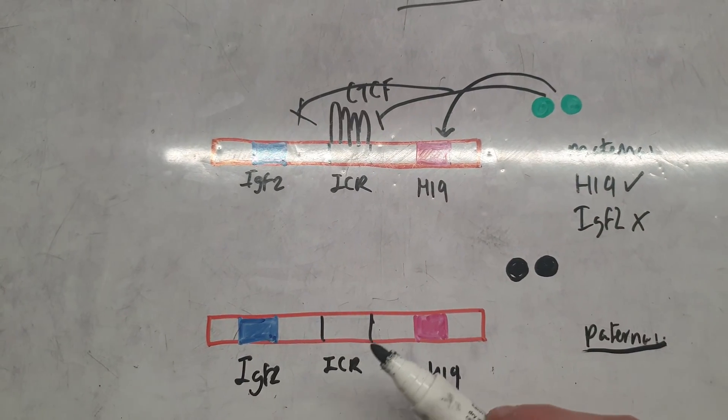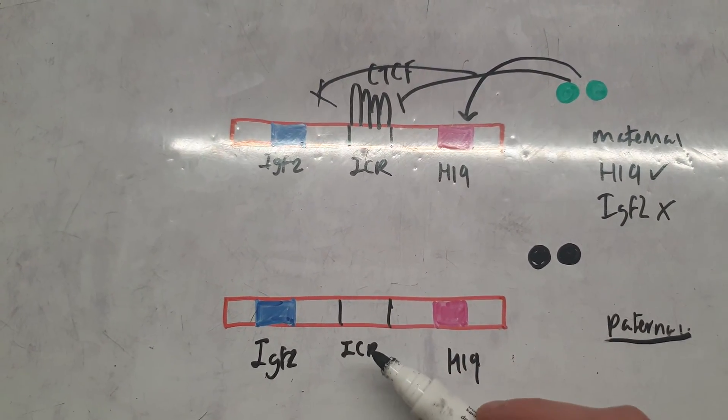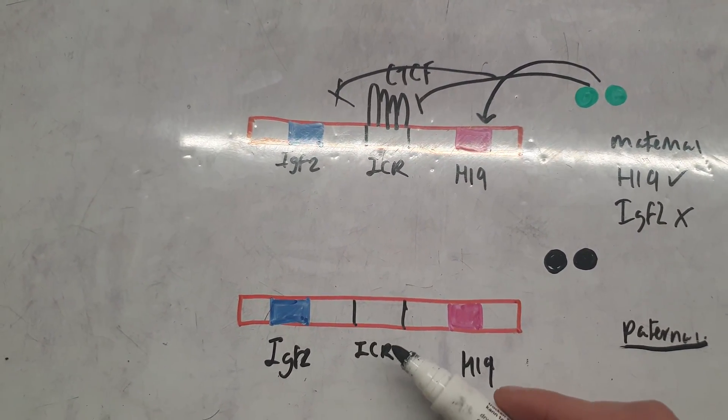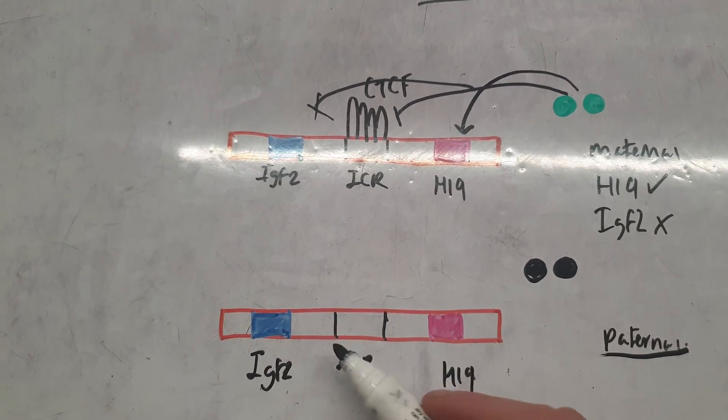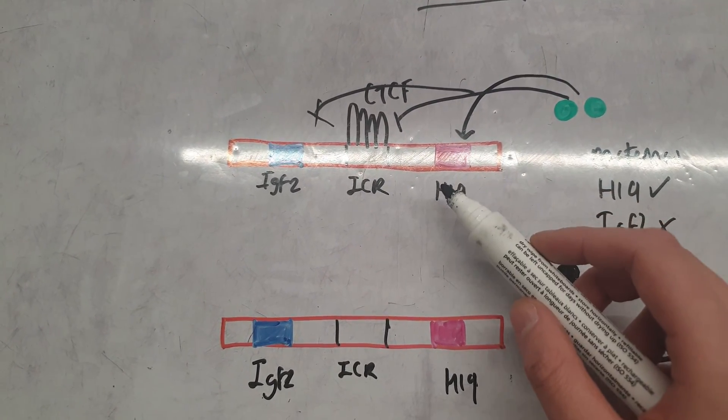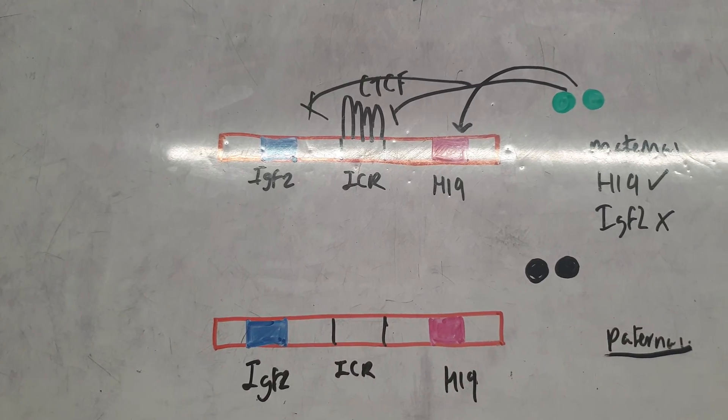If we had our CTCF cluster protein binding to the imprinting control region, then we'd still have the expression that's just exactly the same as what's happening here, and we wouldn't have expression of IGF2.